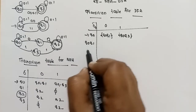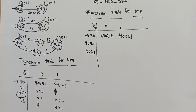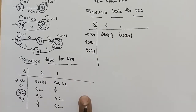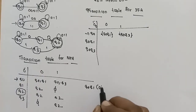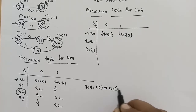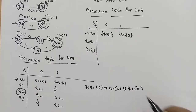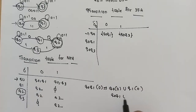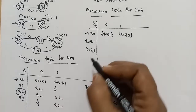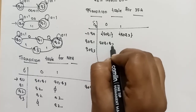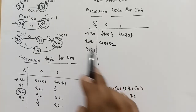Expanding {Q0, Q1}: {Q0, Q1} on 0 = Q0 on 0 union Q1 on 0 = {Q0, Q1} union {Q2} = {Q0, Q1, Q2}. So {Q0, Q1} on 0 goes to {Q0, Q1, Q2}. Next, {Q0, Q1} on 1: Q0 on 1 goes to {Q0, Q3}.